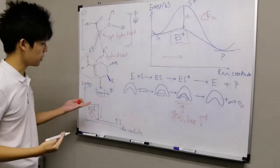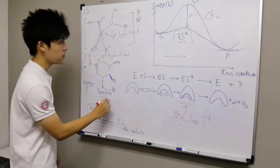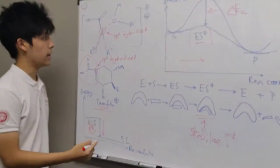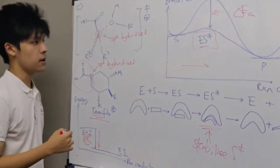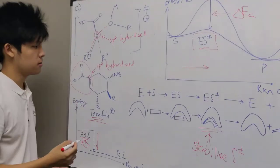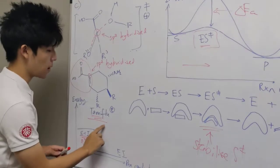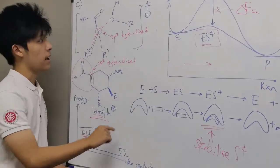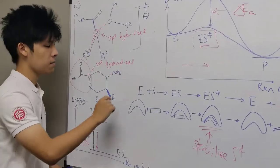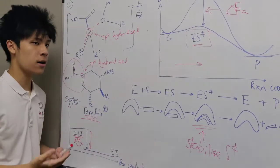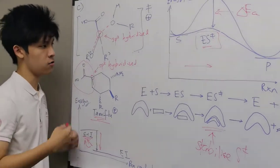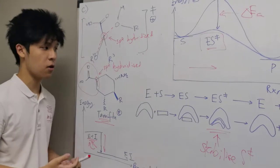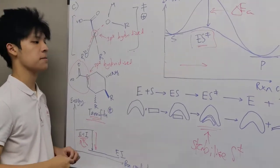Similarly, Tamiflu has a similar structure to the transition state. Therefore, Tamiflu can bind very strongly to the enzyme neuraminidase, and neuraminidase could no longer catalyze the reaction. Therefore, the enzyme is effectively inhibited.